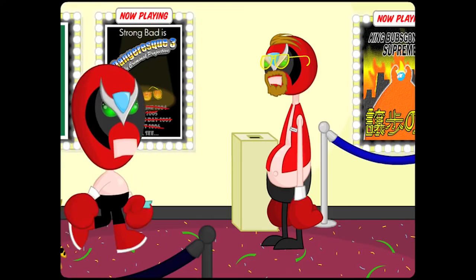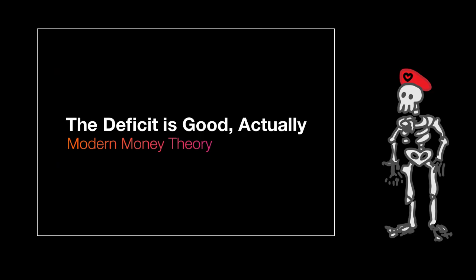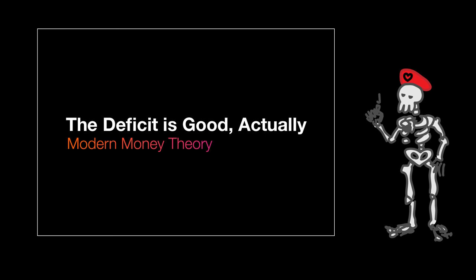The economy can become constrained by the amount of money that the government prints, just as it can be constrained by any resource. But there is no reason to let it be constrained by the amount of money in circulation, because the government can always create more of it — it's not scarce in the same way as other resources. Imagine going to a movie theater and asking to buy a ticket. The guy behind the counter says, 'Sorry, man, we're all out of tickets.' And you're like, 'Oh, there are no more seats?' And he says, 'Oh no — 3% of the seats aren't filled. We have the seats. We're just out of tickets.' And so you're like, 'Well, why can't you just fill those extra seats with people?' And the guy replies, 'We can't afford it. We don't have the tickets.'